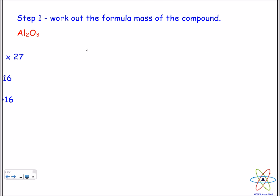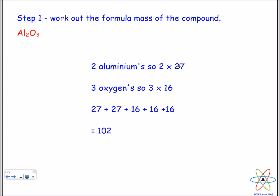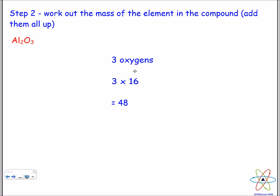The first thing we'll do is work out the formula mass of the compound. We've got 2 aluminum, so 2 times 27. We've got 3 oxygens, 3 times 16. Add all these up and we get a formula mass of 102 for aluminum oxide. Next, we need to work out the mass of the element that was in the question—that was oxygen. We have 3 oxygens in aluminum oxide, so 3 times 16 gives us 48.